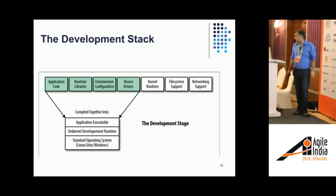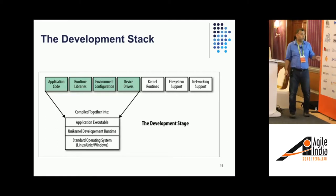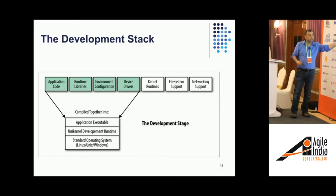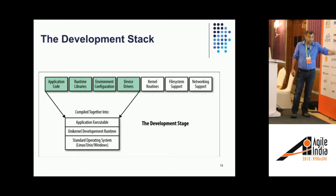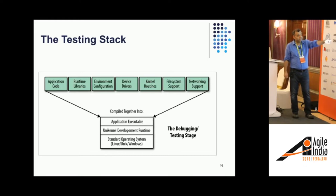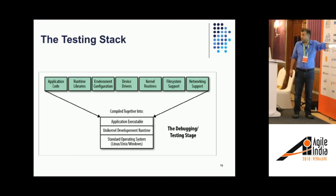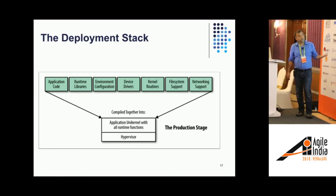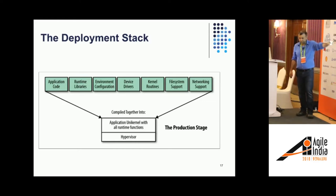This is how a development stack would look. During development, you have your standard operating system and a development runtime — think of it as an emulator. Your application compiles and you don't actually need the kernel routines because your standard operating system provides that during the development phase. Then you move to testing, which still takes all those kernels and file system components because you want to know how your application will behave in production. Finally, once testing is done, you move to production, which takes everything and puts it on the hypervisor — and this is where you lose all visibility of your system.